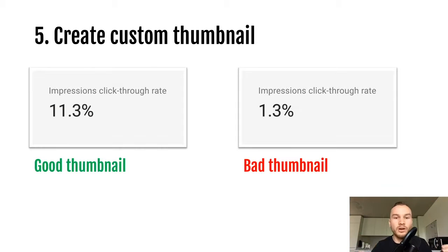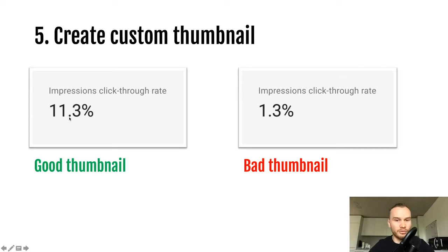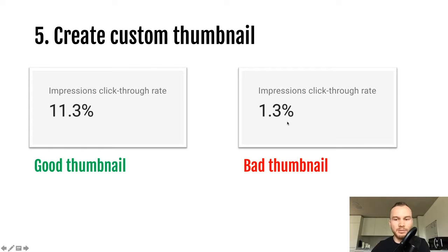The next thing is to create a custom thumbnail. Here are two examples from my YouTube statistics. With a good thumbnail, I got an 11.3% impression click-through rate — meaning for every 1,000 people who saw my video, 113 clicked on it. A high click-through rate tells YouTube that if they show this video to 1,000 people, at least 11.3% will click, which is the goal of YouTube promotion. With a bad thumbnail, I only got 1.3% click-through rate, which is quite bad.